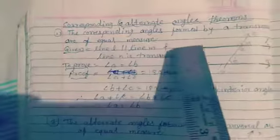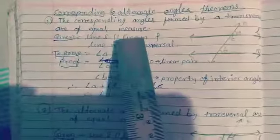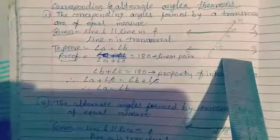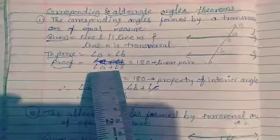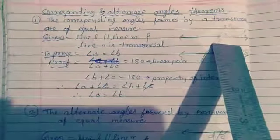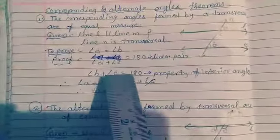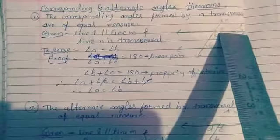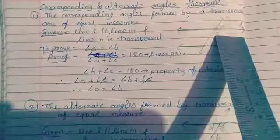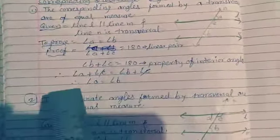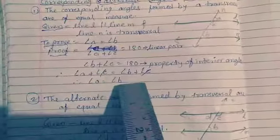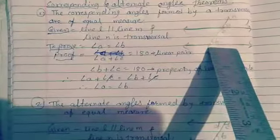Next is the corresponding and alternate angles theorem. The corresponding angles formed by a transversal are of equal measure. Line L and M are parallel lines and N is their transversal. To prove: angle A is equal to angle B. Here, angle A plus C is equal to 180 because they are a linear pair, and angle B plus C is equal to 180 by the property of interior angles. So A plus C equals B plus C, C gets cancelled, and we get angle A is equal to angle B — the corresponding angles theorem.